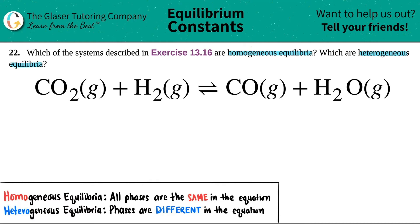Here's the definitions down here. It kind of goes back to when we did homogeneous mixtures and heterogeneous mixtures. Homogeneous equilibria: all of the phases are exactly the same throughout the whole balanced equation. In heterogeneous equilibria, you've got to see some differences. You're going to see phases that are different in your equation.